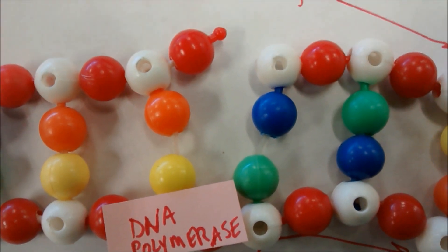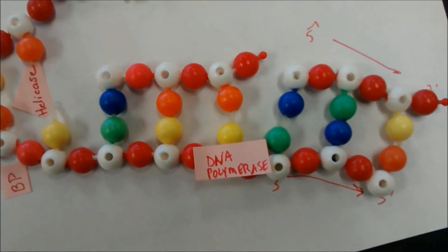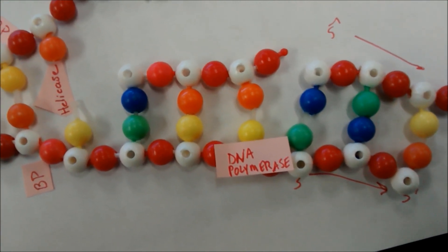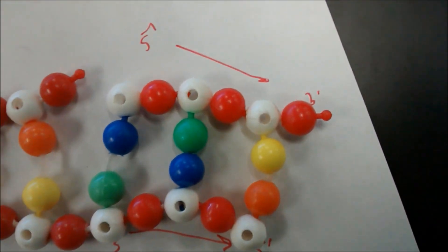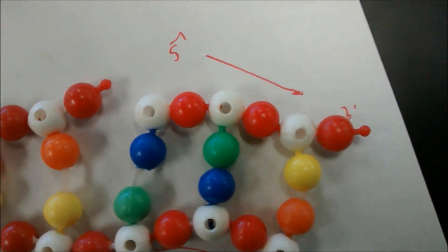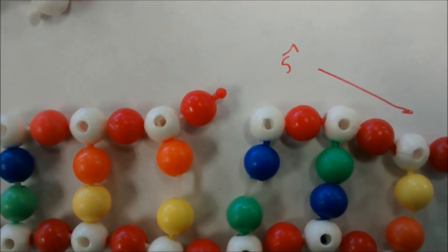And created this next one. So then he gets to here, and there's already something there, so he has to jump off and come back and start again. So you can see that we've built some fragments, we've got this first fragment that DNA polymerase built, he jumped off, came back, built this fragment right there, but they're not joined.